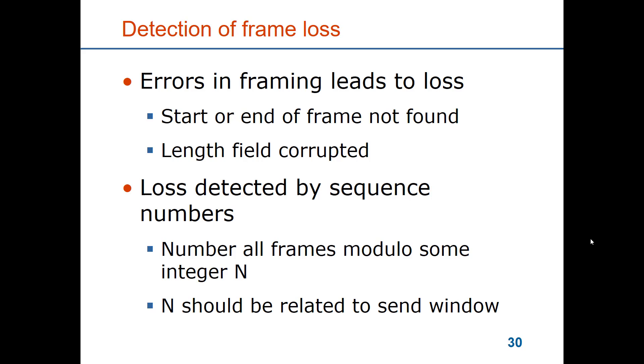So if we have a sequence number of two bits we would expect frame 0, frame 1, frame 2, frame 3, frame 0, frame 1, frame 2, frame 3 and so forth. If we receive frame 0 and then frame 2 then we know that frame 1 has been lost. So this is very simple.